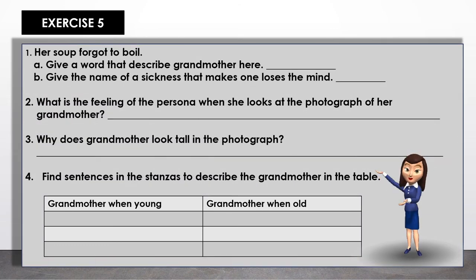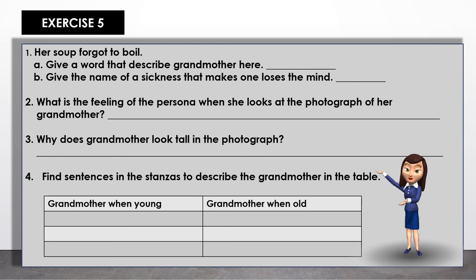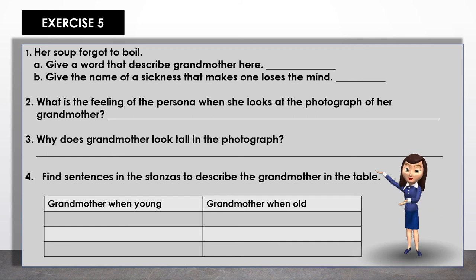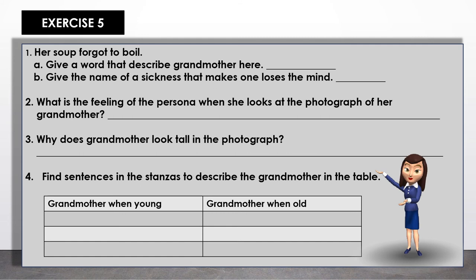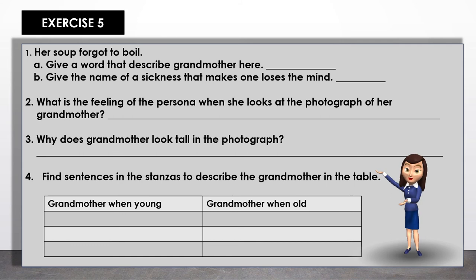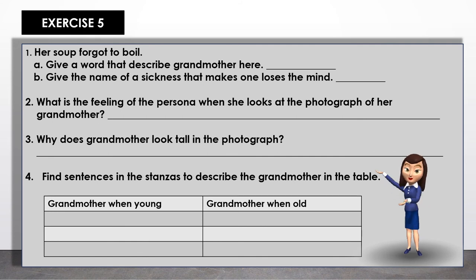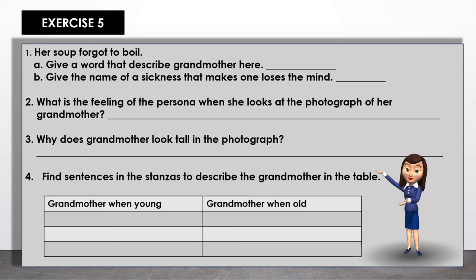Exercise 5. 'Her soup forgot to boil.' Question 1A: Give a word that describes grandmother here — you can look one up in a dictionary. Question 1B: Give the name of a sickness that makes one lose the mind. Question 2: What is the feeling of the persona when she looks at the photograph of her grandmother? Question 3: Why does grandmother look tall in the photograph? Question 4: Find sentences in the stanzas to describe the grandmother in the table.